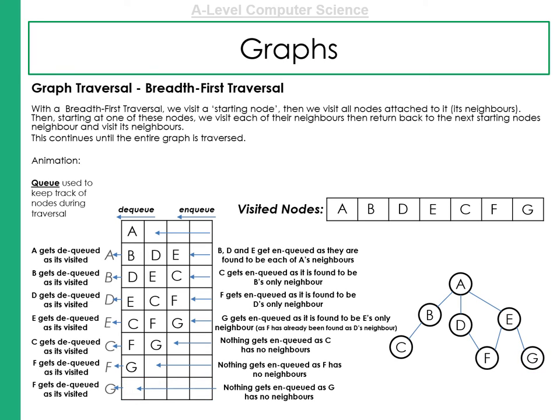Now, remember when we're talking about trees, there were different versions of traversal. There was depth and breadth. It's the same with graphs. There's a breadth-first traversal. So we visit a starting node, then we visit all nodes attached to its neighbours. Then, starting at one of these nodes, we visit each of the neighbours and return back to the starting node. It's best to look at this in an example. For example, we still use a queue here. We use DQ and NQ.